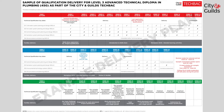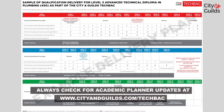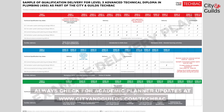The units in the Plumbing Technical Diploma are: 331 Cold Water System Planning and Design, 332 Hot Water System Planning and Design, 333 Central Heating System Planning and Design, 334 Sanitation System Planning and Design, 335 Environmental Technology Systems, and 336 Site Procedures and Planning.